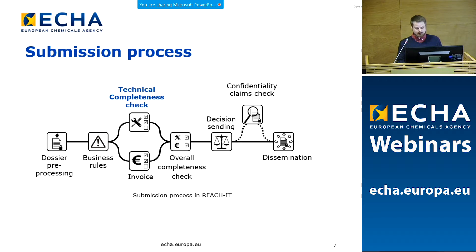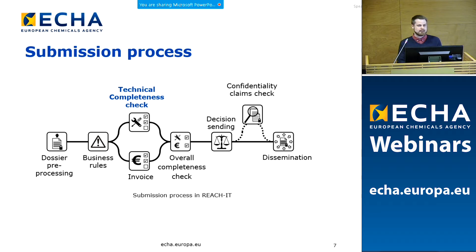This is an overview of the submission process. It starts with the registrant submitting a IUCLID 6 dossier in REACH-IT. After that, it goes through pre-processing where we check for viruses or if the file format is correct. Then the dossier goes to business rule checks, which is the first place a registrant can fail. If you fail at business rule checks level, you can resubmit your dossier as soon as possible. After that, the completeness check procedure comes, which is a parallel process. This includes the technical completeness check as well as the financial completeness check, which is basically the payment of the invoice. The result of these two gives the overall completeness check result, and you will get a decision in REACH-IT. After that, other ECHA processes take place, such as confidentiality claims check and dissemination.